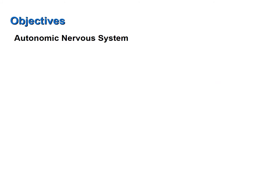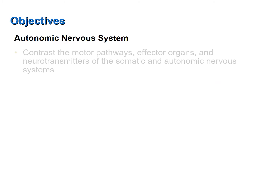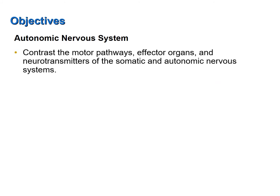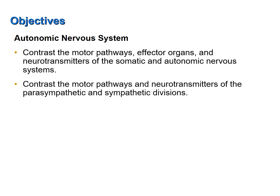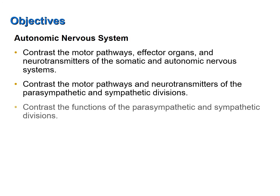The screencast was designed to help you achieve the following objectives: contrast the motor pathways, effector organs, and neurotransmitters of the somatic and autonomic nervous systems; contrast the motor pathways and neurotransmitters of the sympathetic and parasympathetic divisions; and contrast the functions of the parasympathetic and sympathetic divisions.